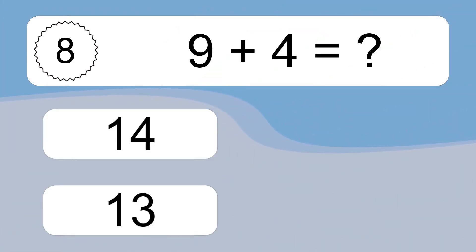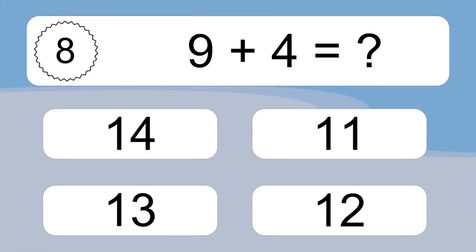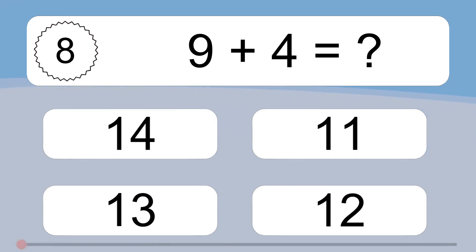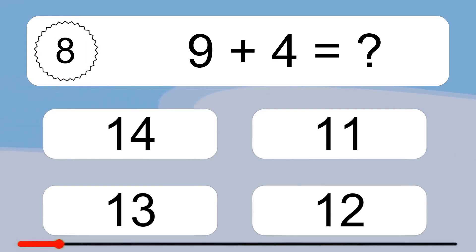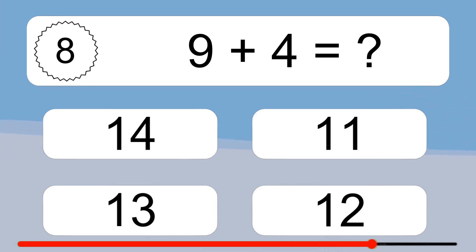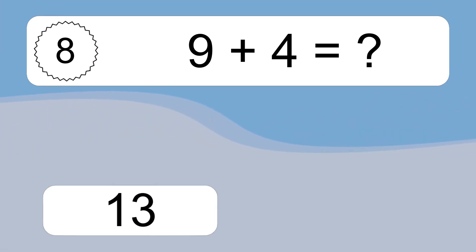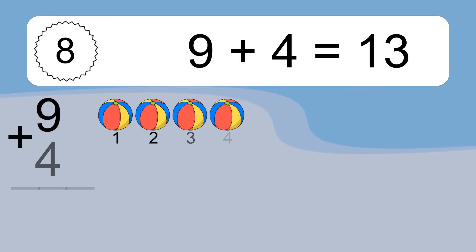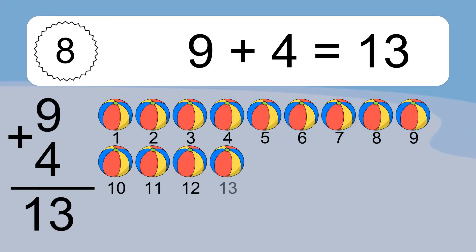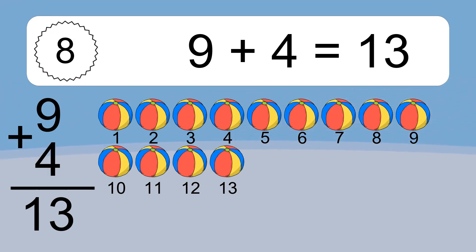9 plus 4 equals what? 9 plus 4 equals 13. Let's count it: 1, 2, 3, 4, 5, 6, 7, 8, 9, 10, 11, 12, 13.